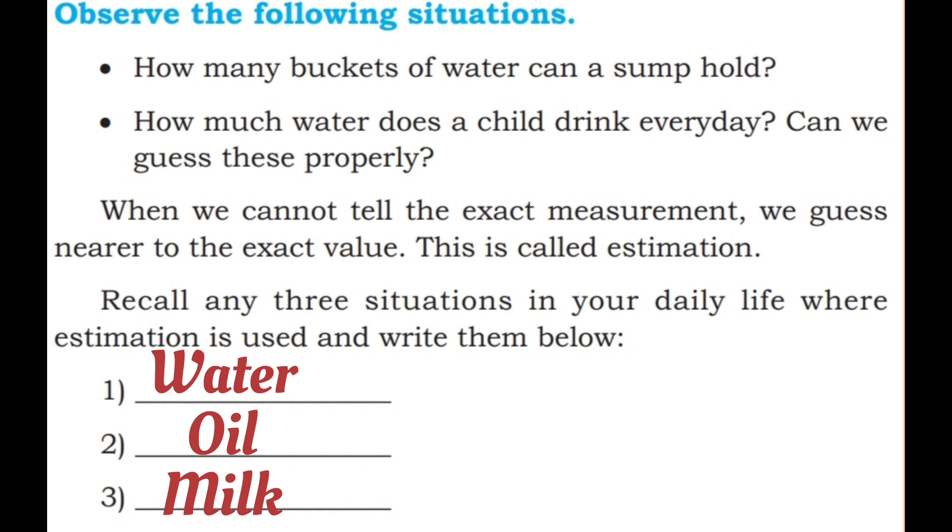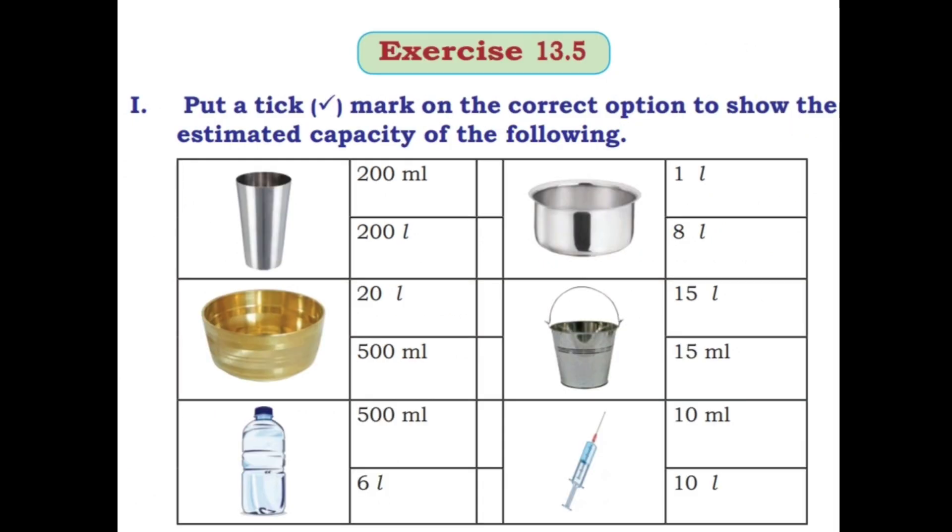Next we will see exercise 13.5. First, put a tick mark on the correct option to show the estimated capacity of the following. This glass is 200 ml or 200 liters, so 200 ml is a tick mark. This bowl is 20 liters or 500 ml.